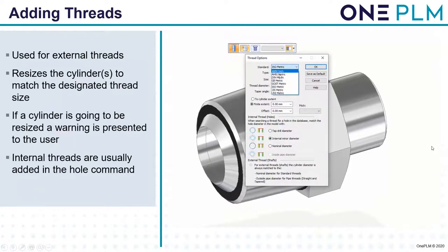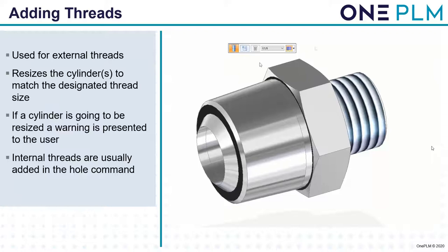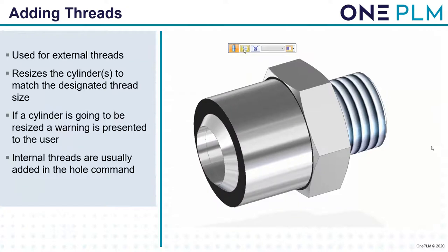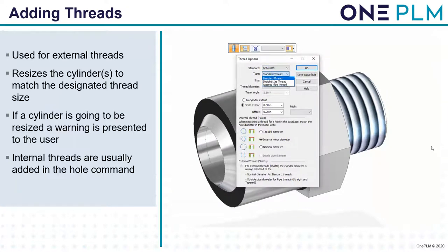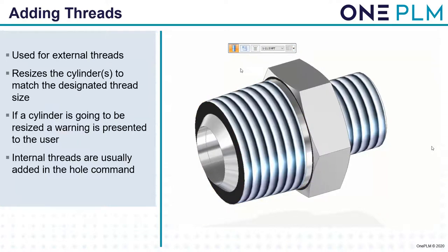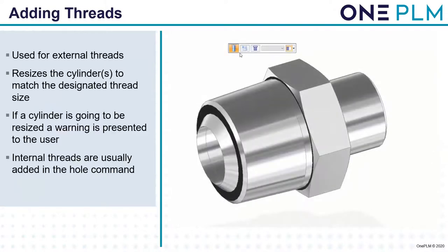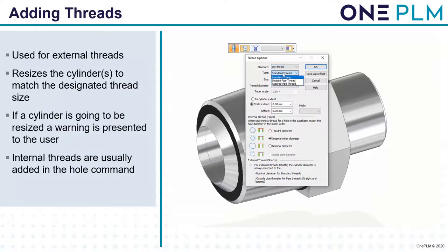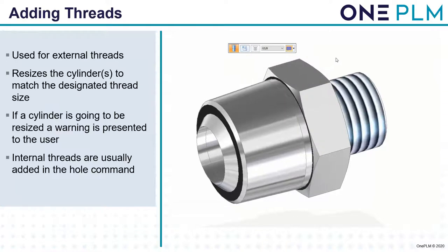Adding threads: when we've got imported geometry it's important to have threads added. We go to the thread command, specify and add a thread — it will recognize the thread, and if we change it, it changes the size to match. For a tapered thread, we need to delete the actual tapers first because the tapering gets created automatically from the thread command. We put in the size, click at the start of where the thread goes and finish — threads are created. Multiple threads are available in multiple different standards including DIN and others, covering straight pipe threads, normal threads, and tapered pipe threads.